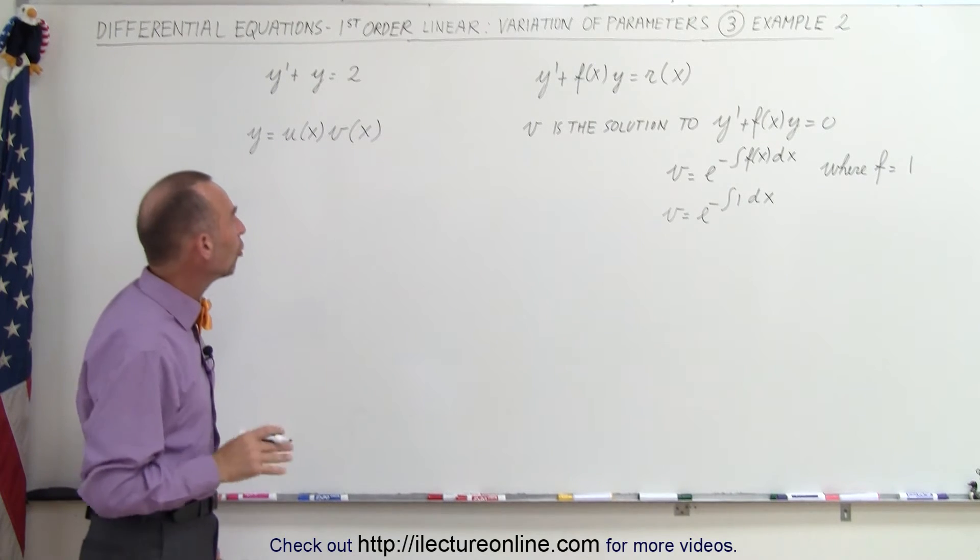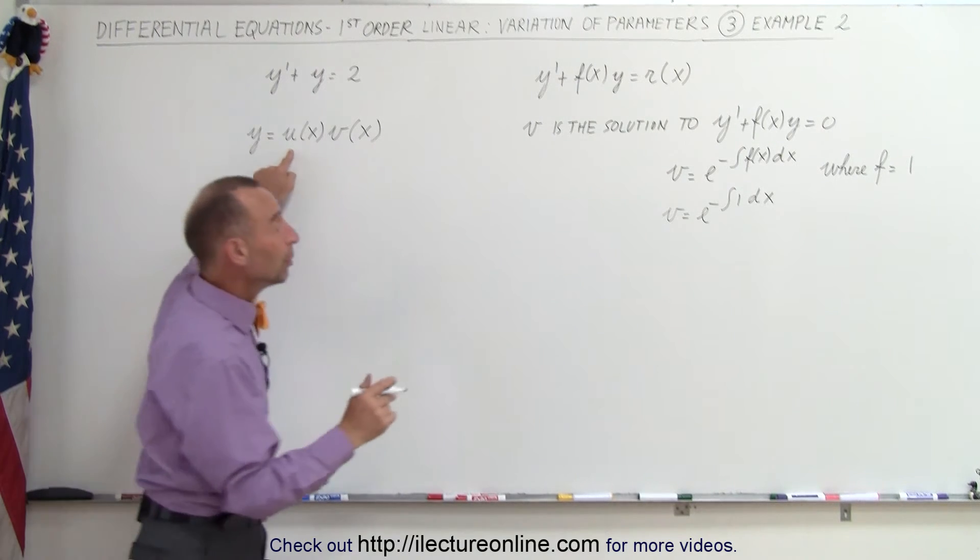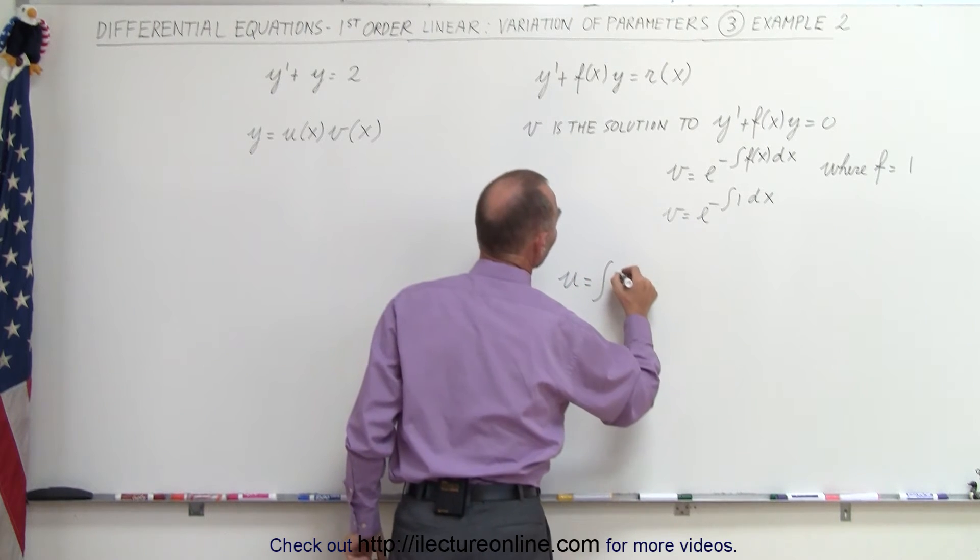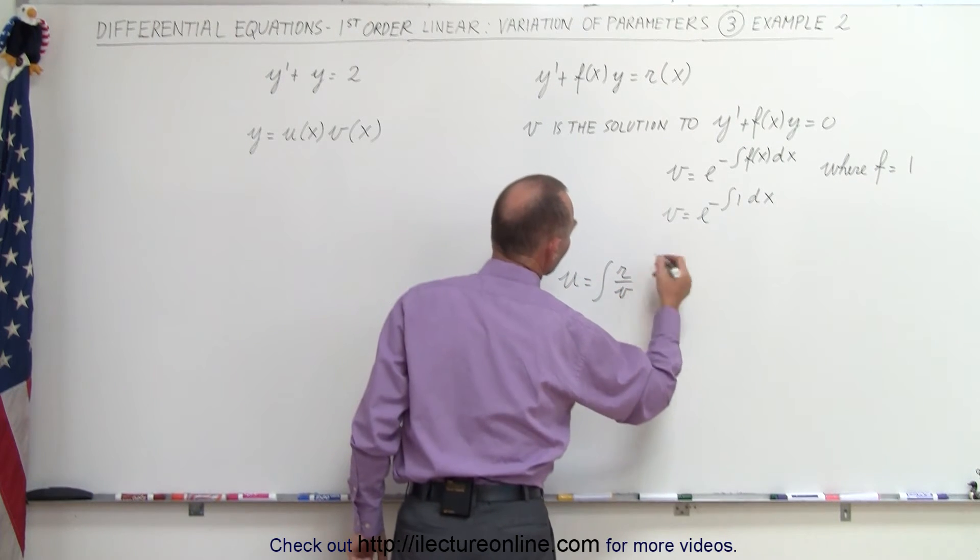And if v is the solution to the homogeneous part, then u can be written as u would be equal to the integral of r divided by v times dx.